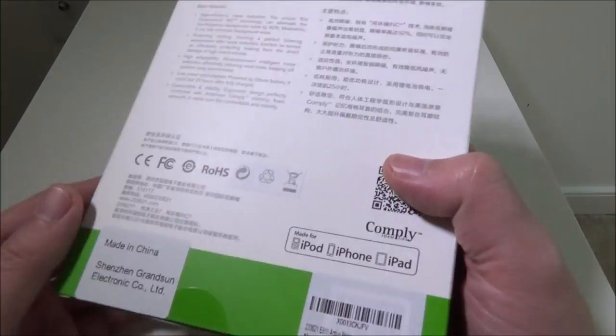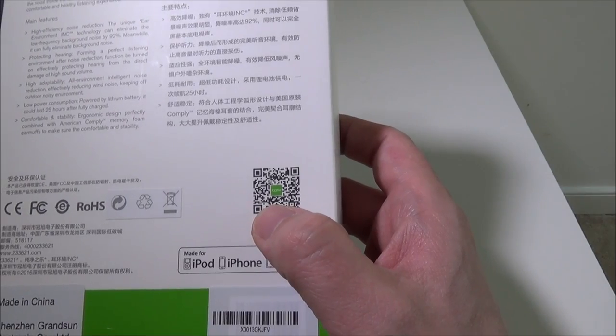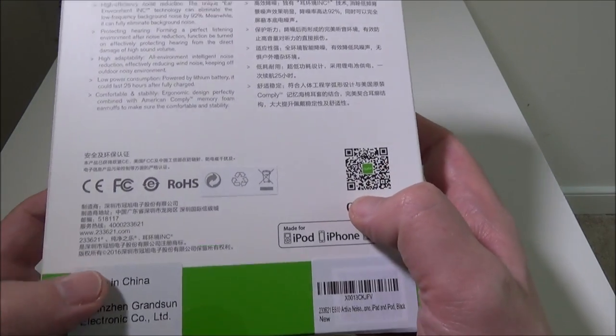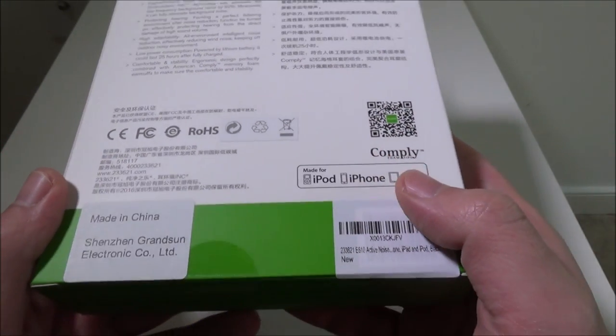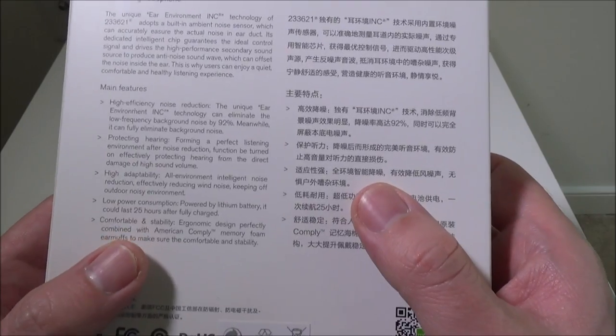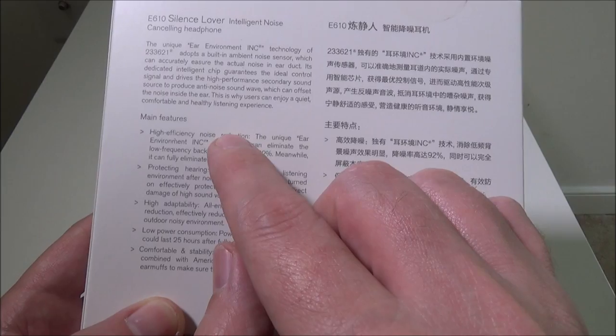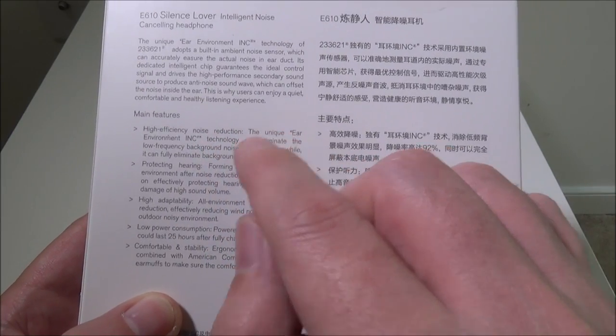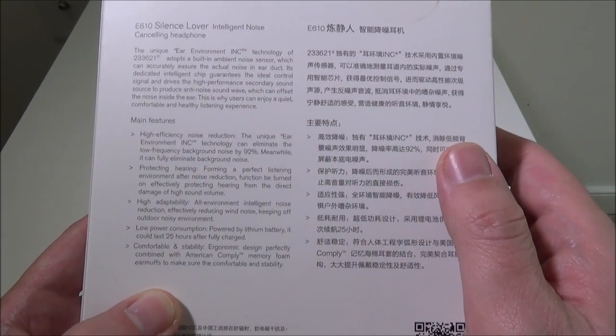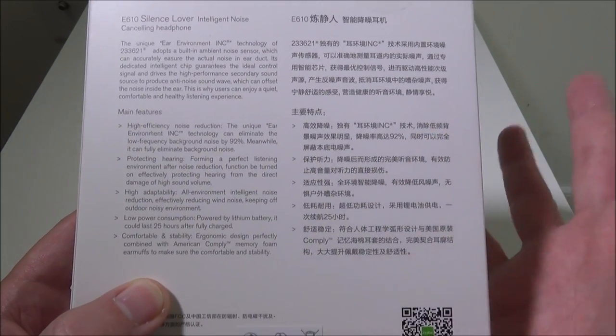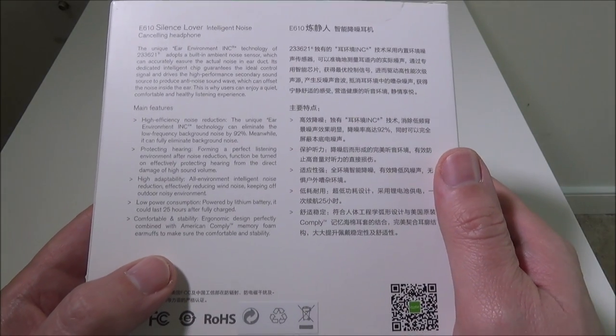What I was surprised with these is that you don't really lose any sound quality like some active noise cancellation devices. On the back you've got a QR code that'll take you to 233621 if you want to check them out at www.233621.com. High efficiency noise reduction, they have an ear environment INC technology that can eliminate low frequency background noises by up to 92%.